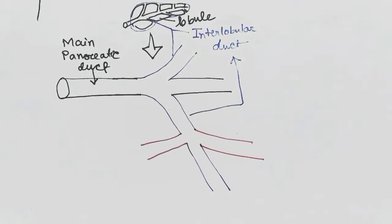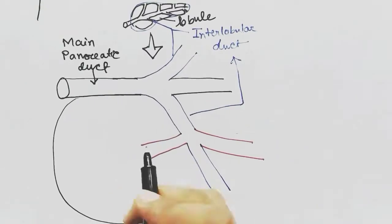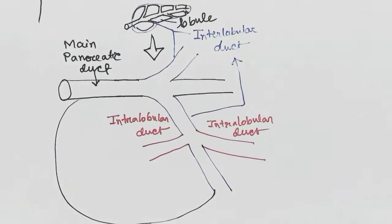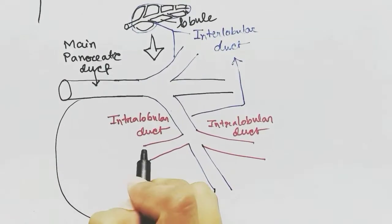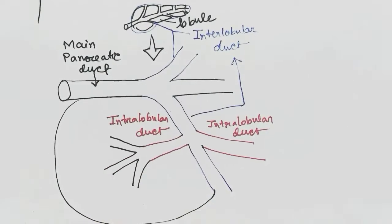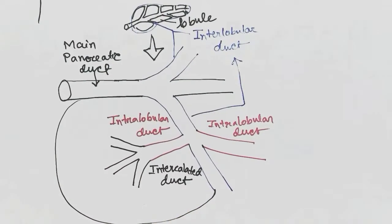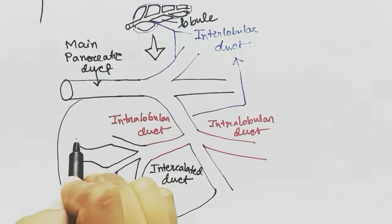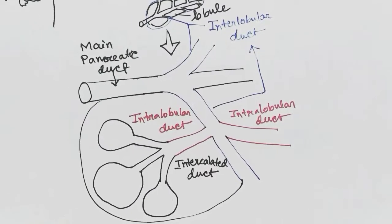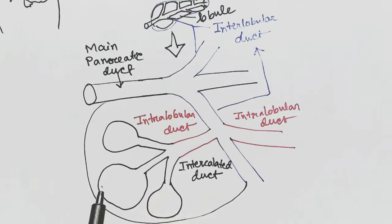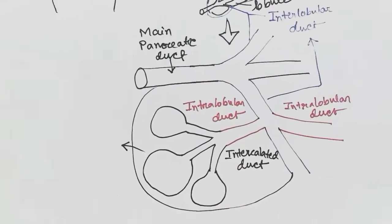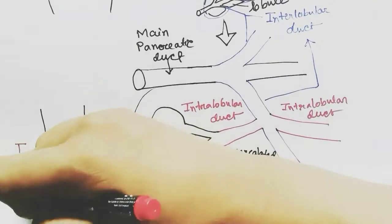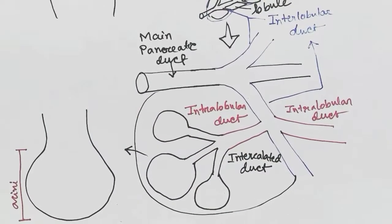The branches present inside the lobules are called intralobular ducts. The intralobular ducts also have branches called intercalated ducts. These intercalated ducts end into a pouch-like structure called an acinus. This region is called the acinus and is connected to the intercalated duct.